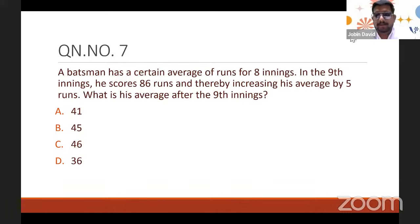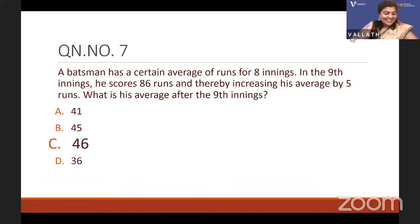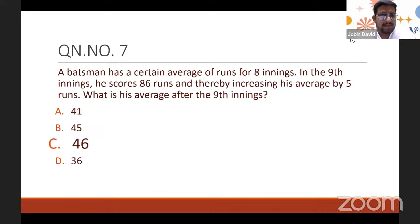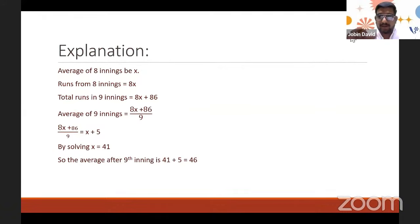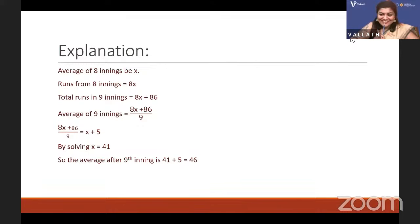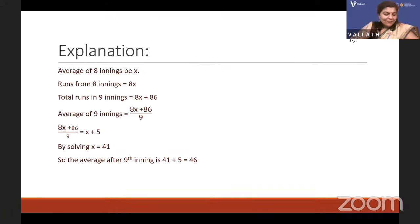Solving (8x + 86) ÷ 9 = x + 5 gives x = 41. The average after the 9th inning = 41 + 5 = 46. Anitesh got it first. The process is the same as Question 6 — find x, then add 5 since the average increased.